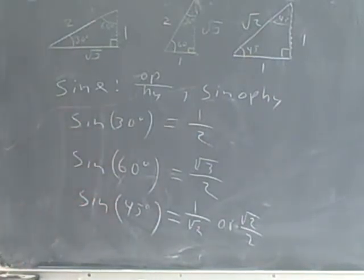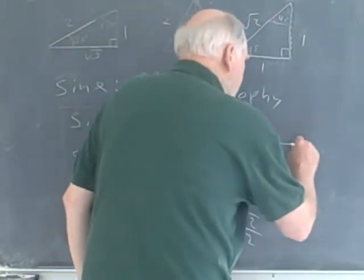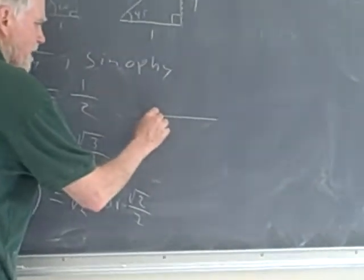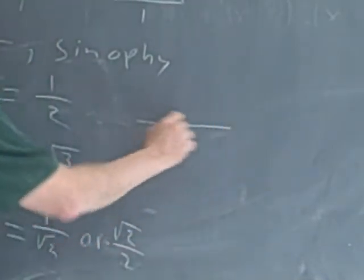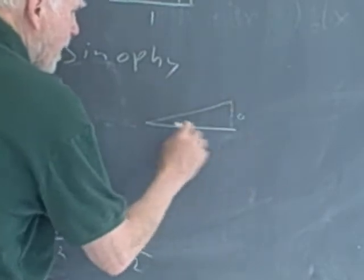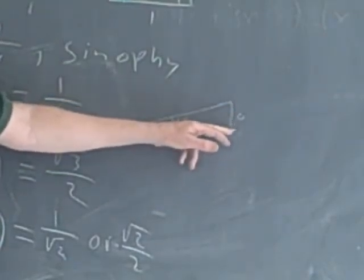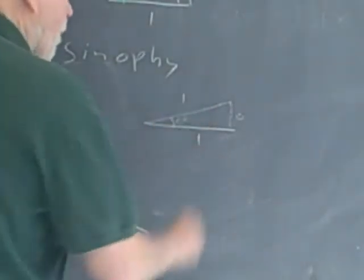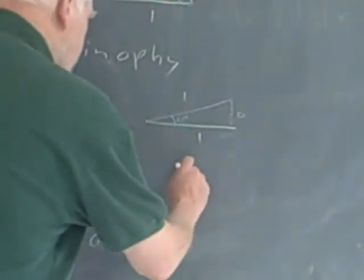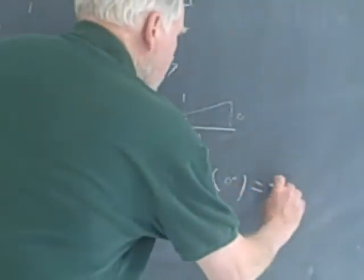So we have sine of 30, 60, and 45. Now there are a couple other common angles: 0 degrees and 90 degrees. We don't have a real triangle for those, so we have to invent one. For 0 degrees, the terminal side would be laying right on top of the initial side. I'll put it just a little bit off, drop my altitude, and call this the 0-degree triangle. This side would be 0 in length and the two sides would be equal, so we call them 1 and 1. The sine of 0 degrees is opposite over hypotenuse — 0 over 1 — which equals 0.